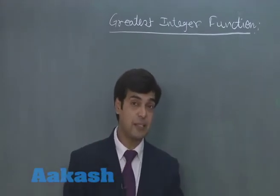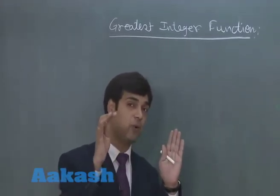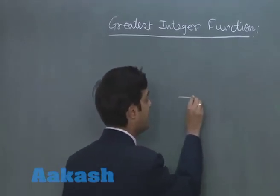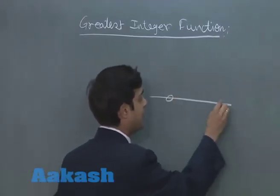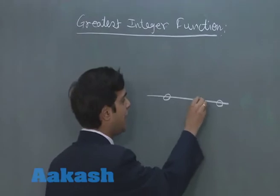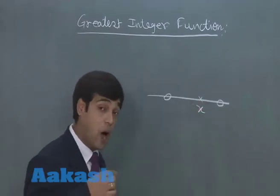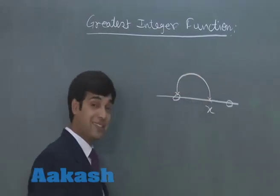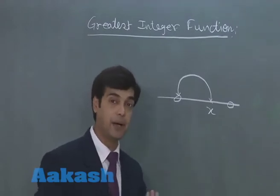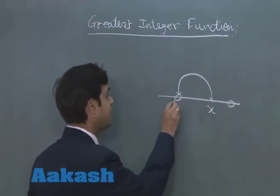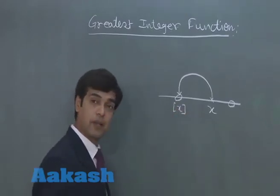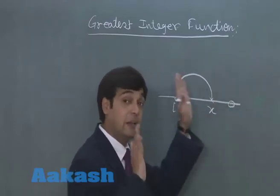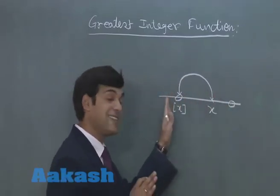Now, what does greatest integer mean? Greatest integer means that whatever number you are talking about, it takes the previous integral value. Let us consider a number line — there are integers placed on it and x lies somewhere on it. The greatest integer function takes the previous integral value, or equal to the number. If x is given, the greatest integer of x is the previous integral value.